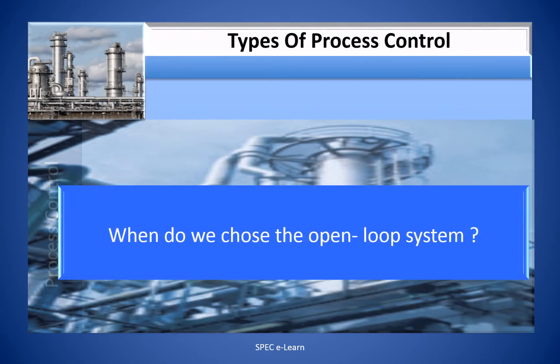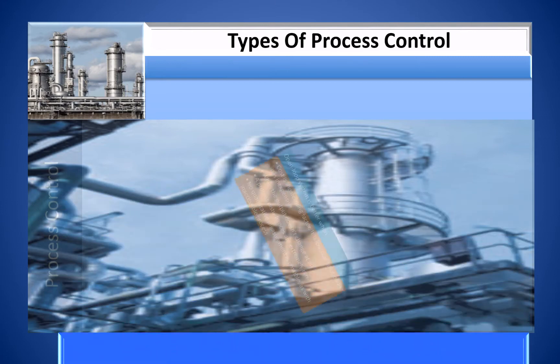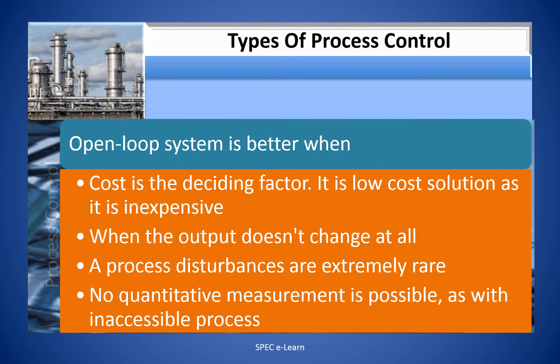When do we choose an open loop system? Open loop system is better when cost is a deciding factor — it is a low cost, inexpensive solution. It is appropriate when the output does not change at all, process disturbances are extremely rare, or no quantitative measurement is possible, as with inaccessible processes.